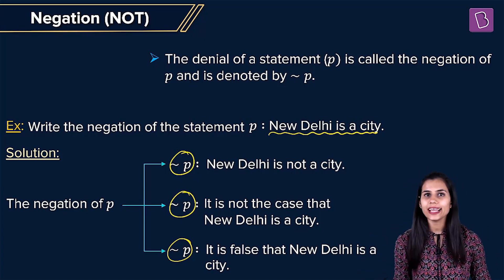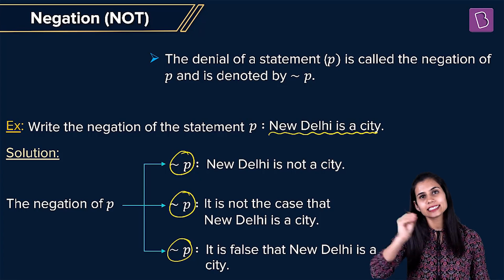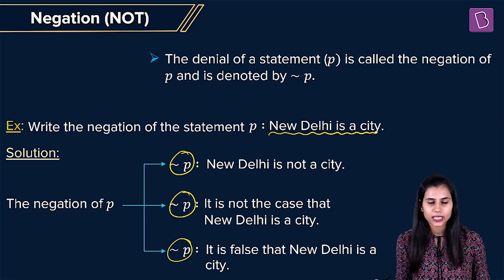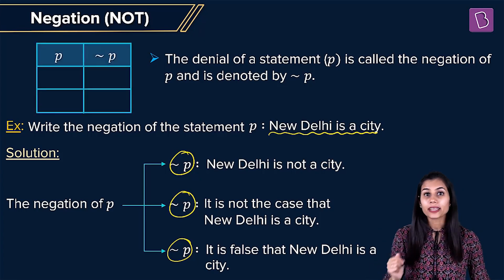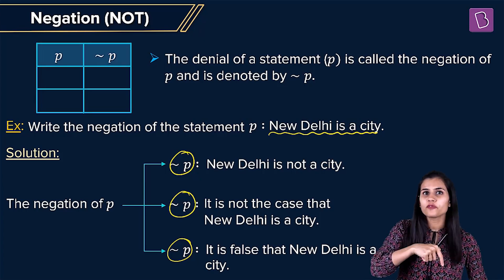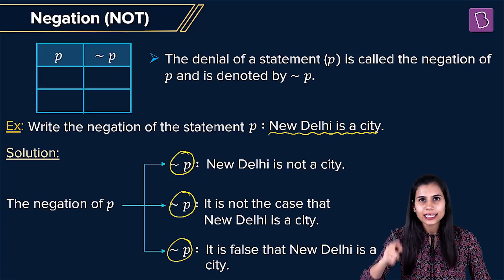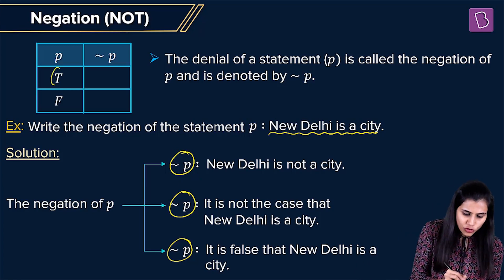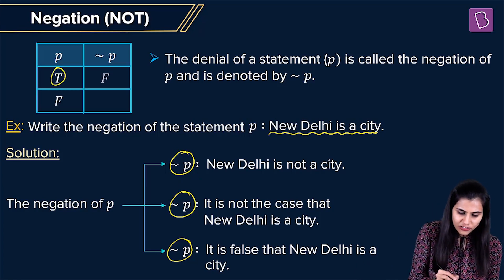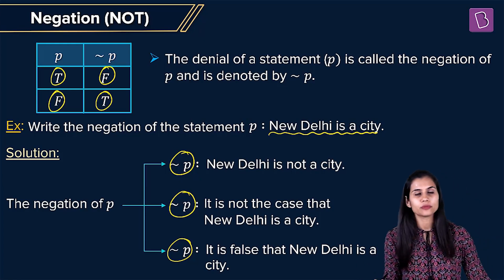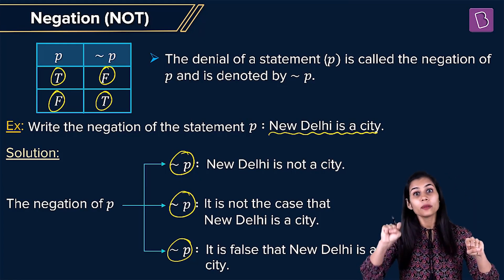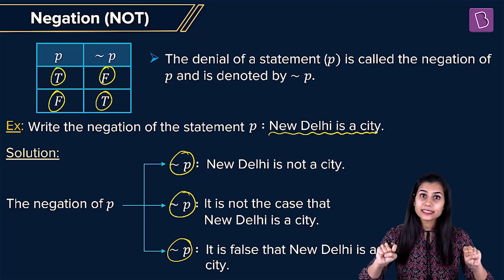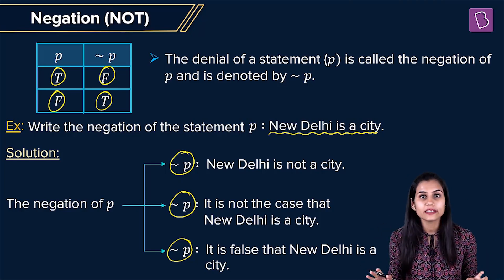How are the truth values of a statement and its negation connected? It's very obvious: because negation P is the denial of P, if P is true then negation P will be false, and if P is false then negation P will be true. So if P is valid, negation P will be invalid, and if P is invalid, negation P will be valid.